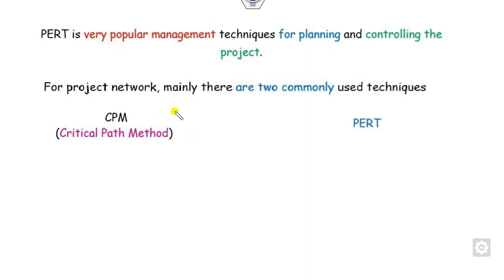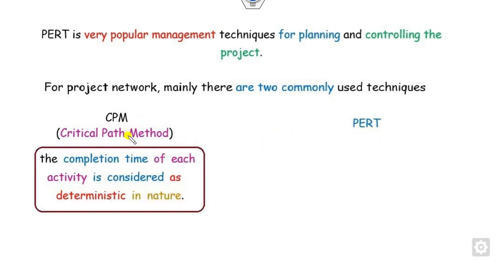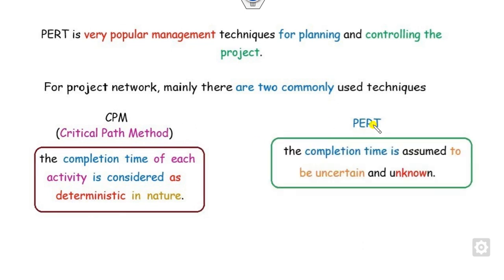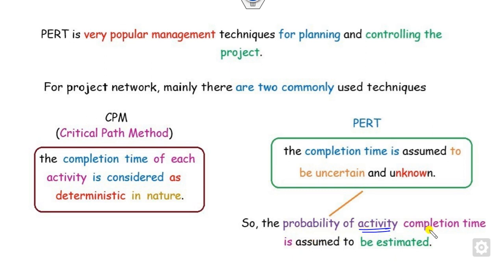So far we have discussed there are two kinds of network analysis. One is called the critical path method, abbreviated as CPM. The second one is called PERT. The basic difference between them is: in CPM, which we discussed in our previous lectures, the completion time for each activity is always given as deterministic in nature. However, in PERT, the completion time is always uncertain — you can say it is unknown. Whenever there is uncertainty, we have to calculate the probability of the activity completing within their time periods. How we can compute this probability is the analysis of PERT that we will see in this lecture.